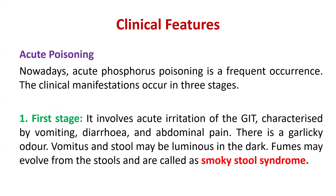Clinical features are very important. Acute poisoning is divided into three stages. Acute poisoning from phosphorus is a frequent occurrence. In the first stage, it irritates the GIT, characterized by vomiting, diarrhea, and abdominal pain. There is a garlicky odor. Vomitus and stool may be luminous in the dark. Fumes may evolve from the stools and are called smoky stool syndrome — this is a key MCQ point.